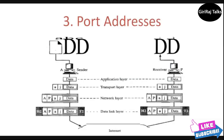The third address type is port addresses. The IP address and the physical address are necessary for a quantity of data to travel from a source to the destination host. However, arrival at the destination host is not the final objective of data communications on the internet. A system that sends nothing but data from one computer to another is not complete. Today, computers can run multiple processes at the same time. The end objective of internet communication is a process communicating with another process. For example, computer A can communicate with computer C using Telnet, while at the same time computer A communicates with computer B using the File Transfer Protocol (FTP). For these processes to receive data simultaneously, we need a method to label the different processes — in other words, they need addresses.